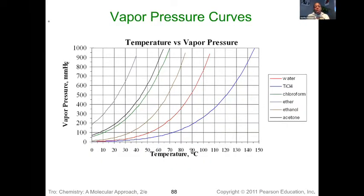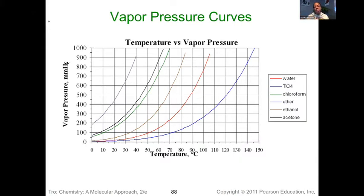A vapor pressure curve is simply a plot of temperature on the x-axis and vapor pressure of a substance on the y-axis. We can predict things about the intermolecular forces based on what we see here. The substance in dark blue — the very first top line — is coming in at 200 millimeters of mercury at zero degrees Celsius. At that low temperature we already have vapor pressure created, versus the more royal blue color, which doesn't start seeing significant increases until we add more temperature and get it up higher.